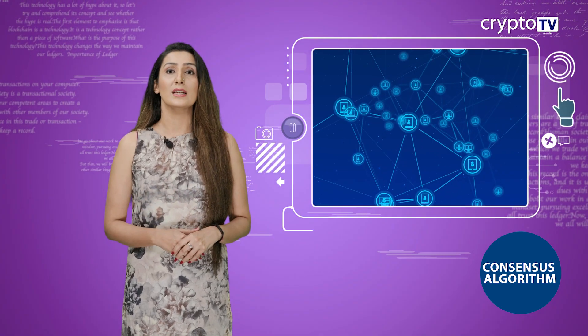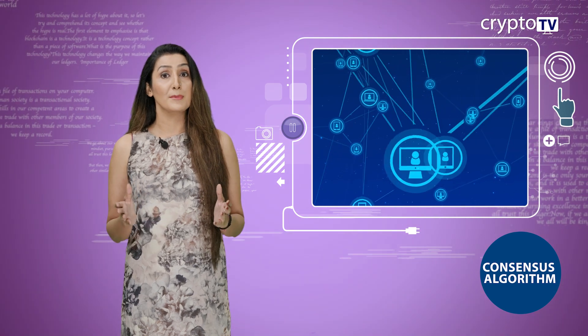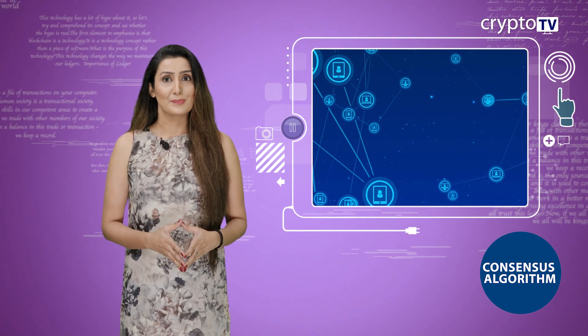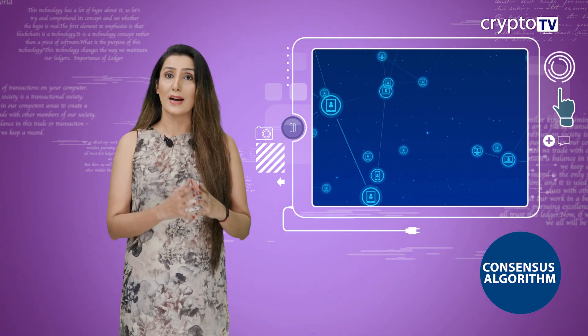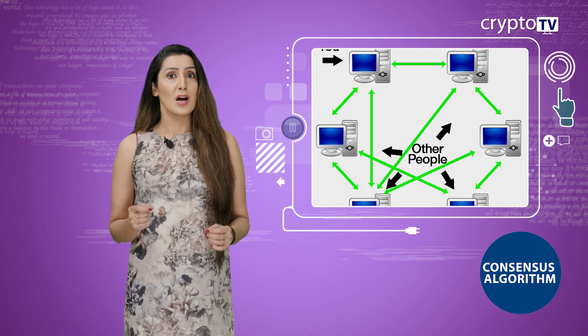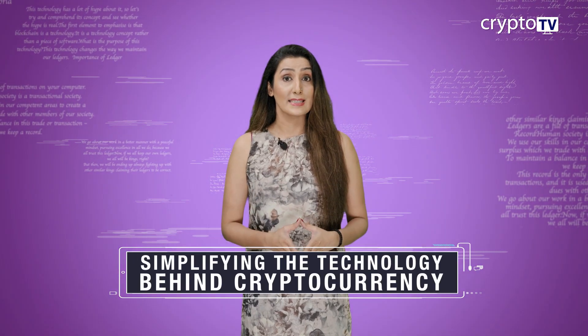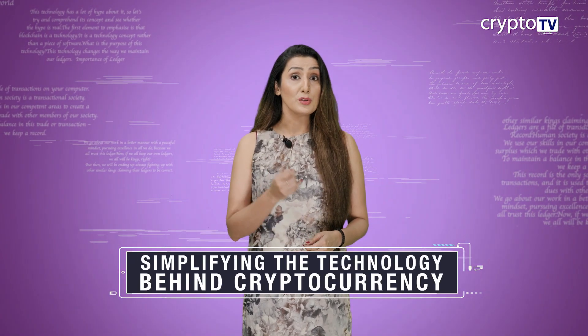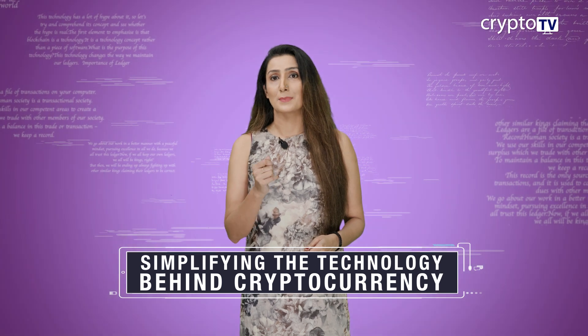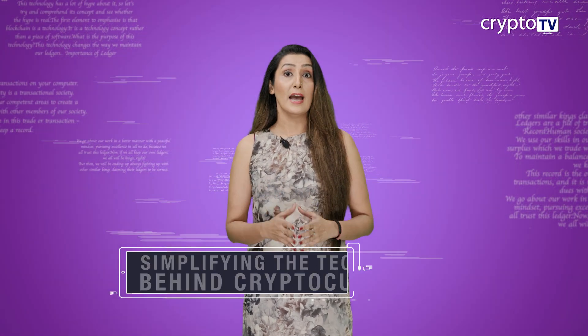In the blockchain ecosystem, a consensus algorithm is a defined programmed procedure. It is a set of rules which defines how the peer participants of the peer-to-peer network conduct themselves in the environment. These rules help the participants decide which transactions are to be accepted and included in the immutable digital ledger, and which ones are not.